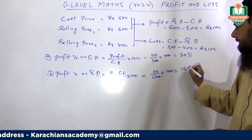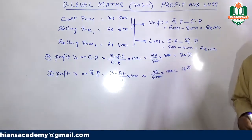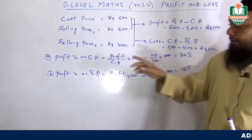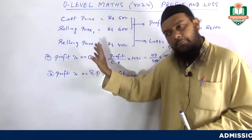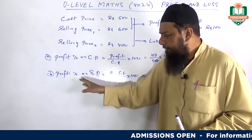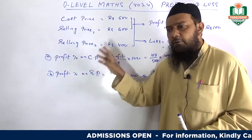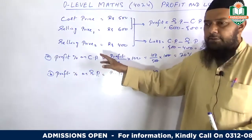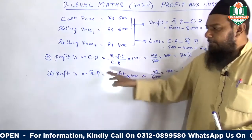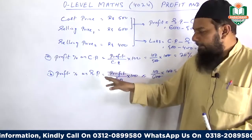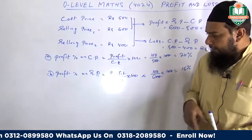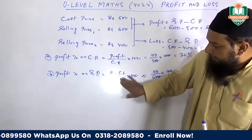That gives around 16 percent. So there is a difference — profit percentage on cost price and profit percentage on selling price are two different formulas. Profit percentage on cost price: profit over cost price multiplied by 100. Profit or loss percentage on selling price: profit or loss over selling price multiplied by 100.